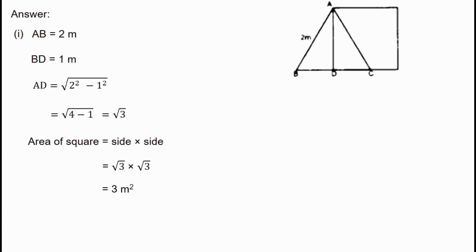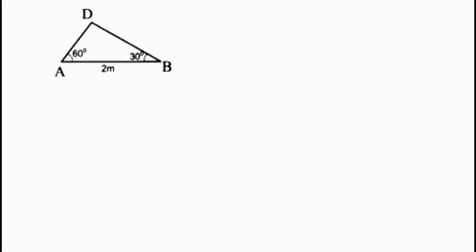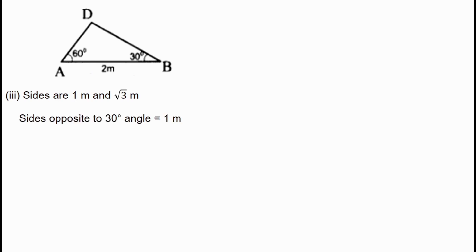ABC is the height of AD. AD equals √3 − 2. B and C is the square, opposite way, approximately 2 to 3 meters. Thank you.